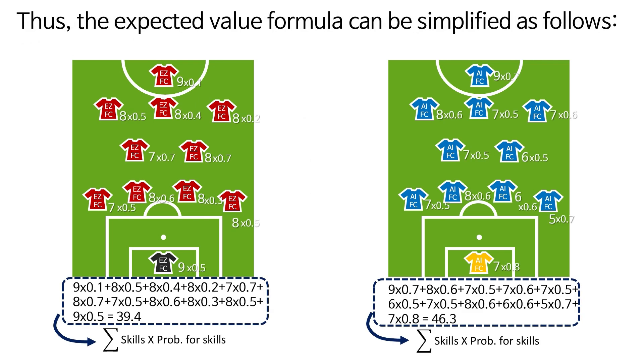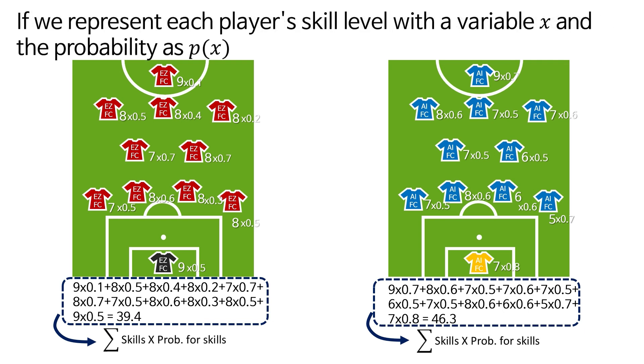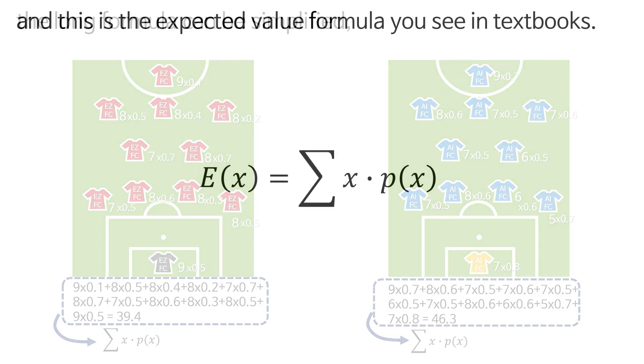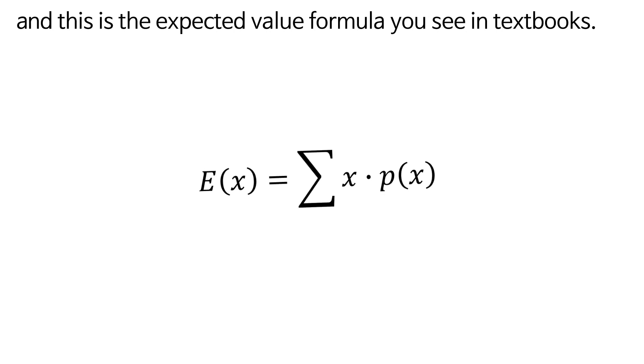Thus, the expected value formula can be simplified as follows. If we represent each player's skill level with a variable x, and the probability as p, the long formula can be simplified, and this is the expected value formula you see in textbooks.